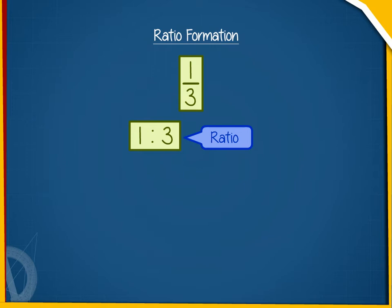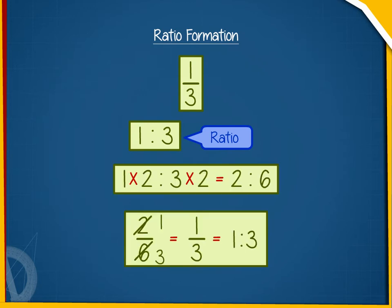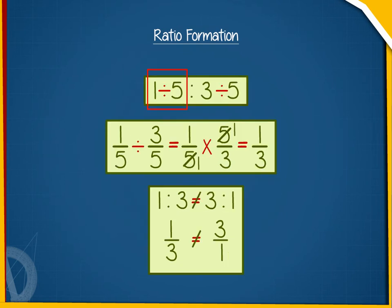If we multiply or divide the terms of the ratio by the same number, the ratio does not change. For example, ratio of 1 to 3 is same as ratio of 1 into 2 to 3 into 2, that is, ratio of 2 to 6. Similarly, 1 divided by 5 to 3 divided by 5 is also same as ratio of 1 to 3.